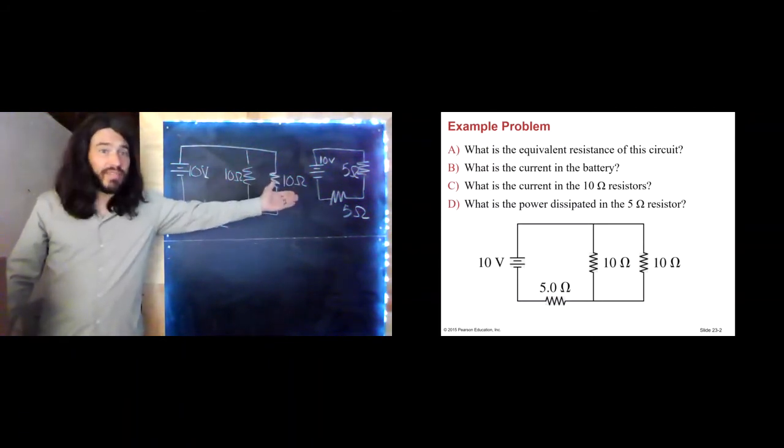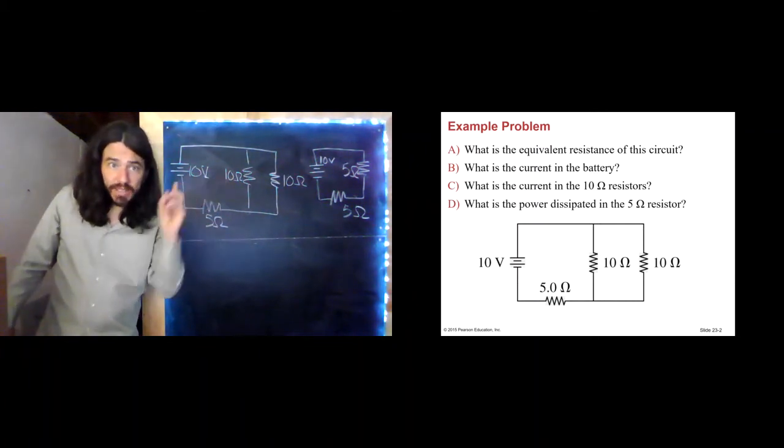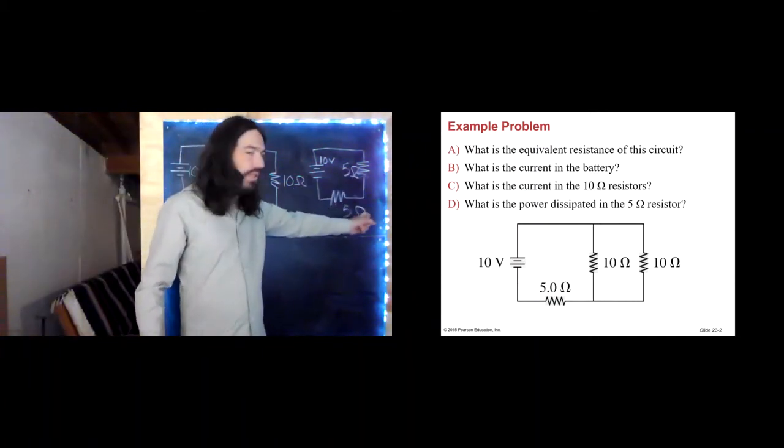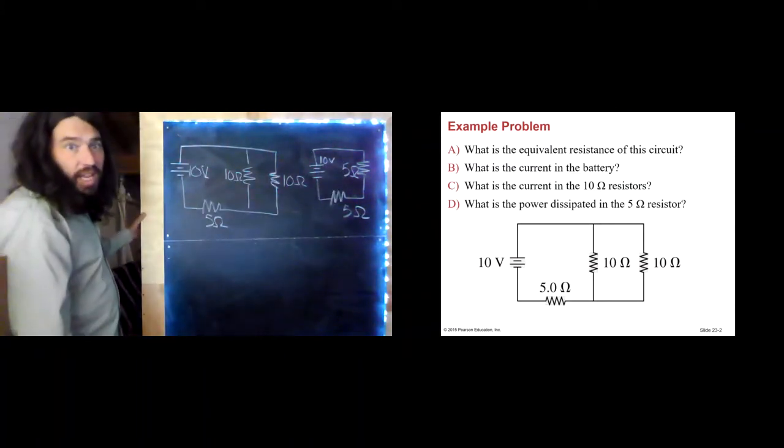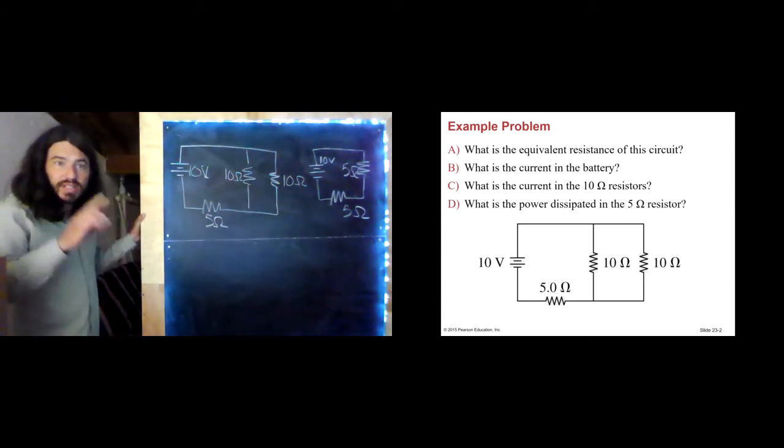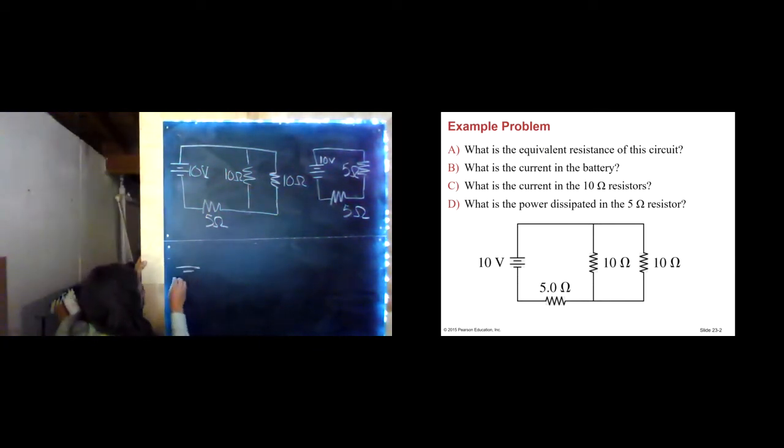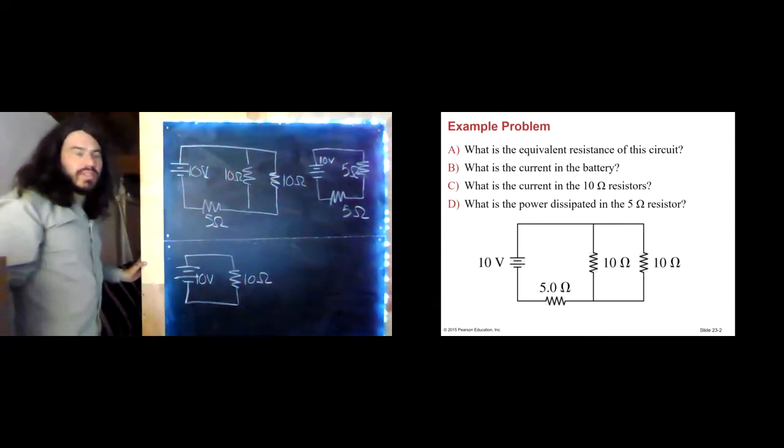Simplified. Now, my 5 and my 5. Series or parallel. Hopefully you picked series. All of the current that goes through this also goes through this. Therefore, they are in series. And we actually solved this one before too. The equivalent resistance of two identical resistors in series is twice the individual resistance. Therefore, there is our simplest version of our circuit.